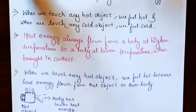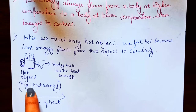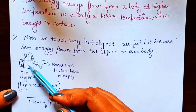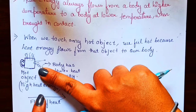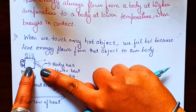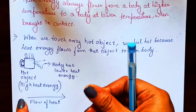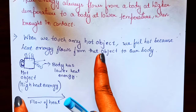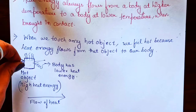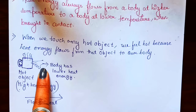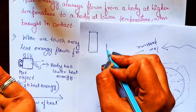If we have a hot object, it has a higher amount of heat energy. When we touch it, our body has less heat energy by comparison, so heat energy flows from the hot object to our body. That's why we feel warm or hot. Heat energy flows from the object with higher heat energy toward the object with lower heat energy.